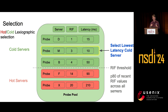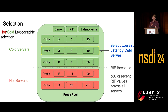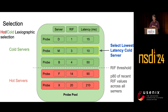When a client continuously probes servers, it collects results into a probe pool. We then apply the hot-cold lexicographic selection rule. We categorize servers into cold and hot based on their request-in-flight level relative to some percentile — for example, if a server is among the top 20% in requests in flight, it's deemed hot and excluded from selection. From the cold servers, we pick the one with the lowest latency estimate. The probes feed back both the requests-in-flight and the latency estimate.